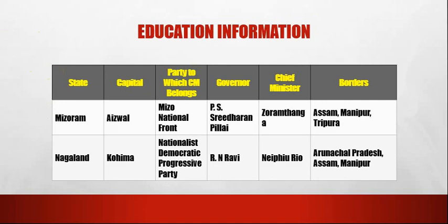The next state is Mizoram. The capital of Mizoram is Aizawl. The party to which the CM belongs is Mizo National Front (MNF). The governor is P.S. Sreedharan Pillai. The chief minister is Zoramthanga. The borders are Assam, Manipur and Tripura.